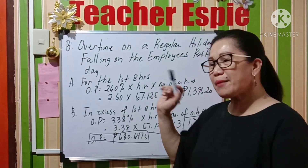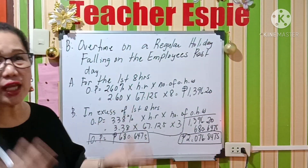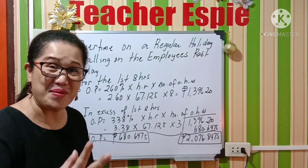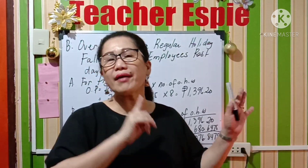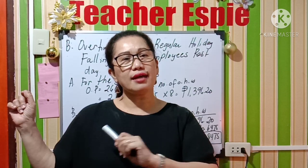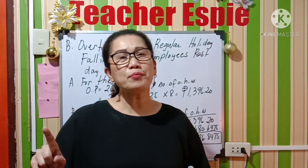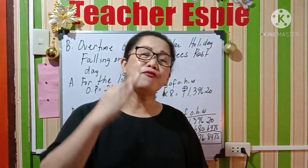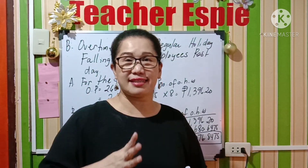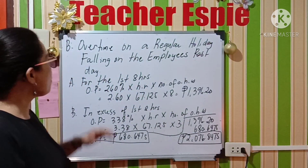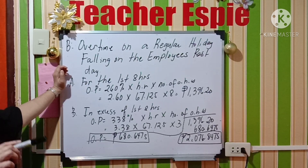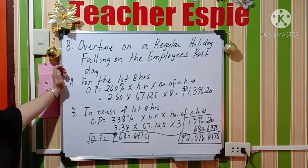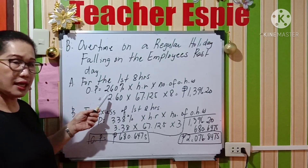For example number two: during a regular holiday that falls on your rest day. For example, December 25 falls on your rest day — from Monday up to Saturday you are working, and your day off is Sunday, but the regular holiday falls on your rest day and you still report to work. So what will be your overtime pay? Overtime on a regular holiday falling on the employee's rest day.